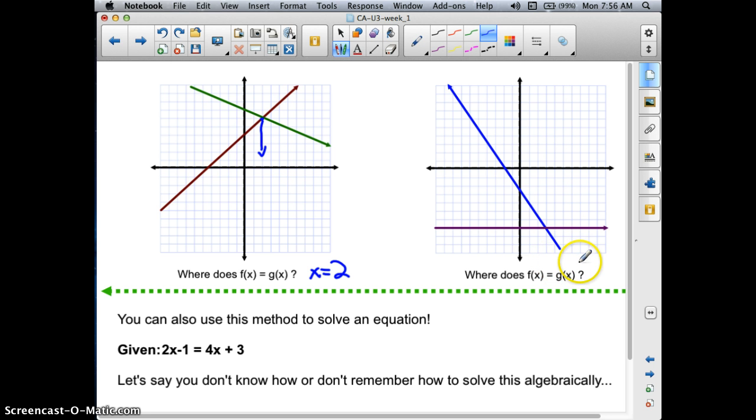You try this one. Pause the video if you need to. I hope you got x is equal to 3. Notice the point of intersection is right here. And at this point, x is equal to 3. All right, that seems so easy that you're not sure you think you're missing something.